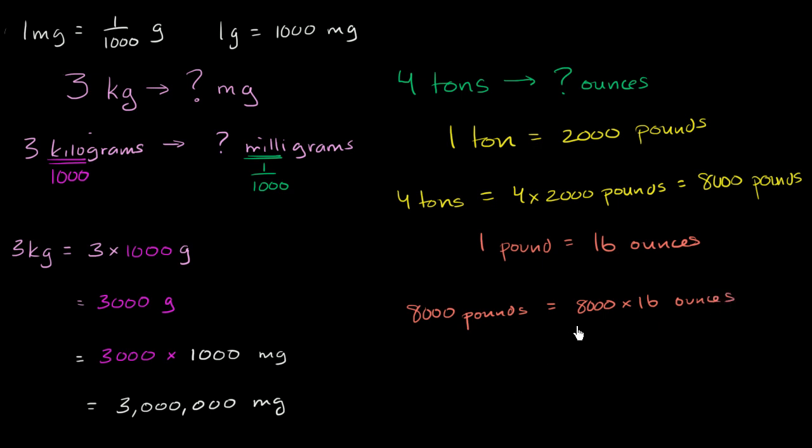So what is 8,000 times 16? So this is going to be, let's see, 8 times 16 is 80, plus 48 is 128, but then that's not 8. We want to do 8,000 times, so it's going to be 128,000 ounces. So four tons are a lot of ounces.